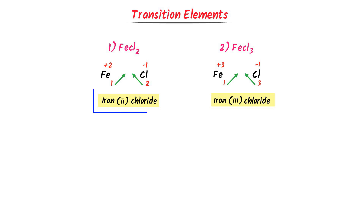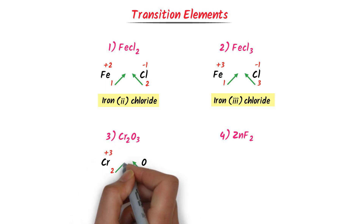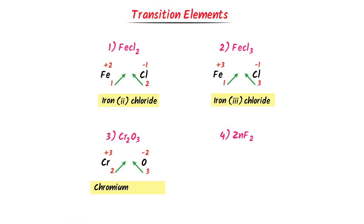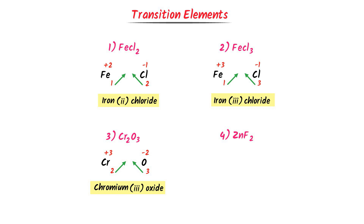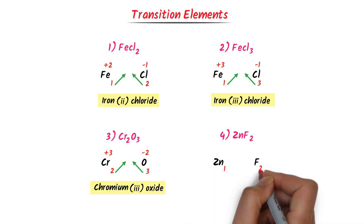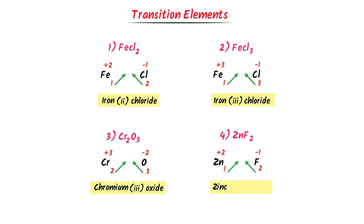For chromium oxide (Cr₂O₃): according to the criss-cross method, the subscript 3 belongs to chromium and 2 belongs to oxygen, so chromium carries +3 charge — giving chromium(III) oxide. For zinc fluoride: zinc carries +2 charge, so we write zinc(II) fluoride. Using this method, we can easily name any ionic compound of transition metals.